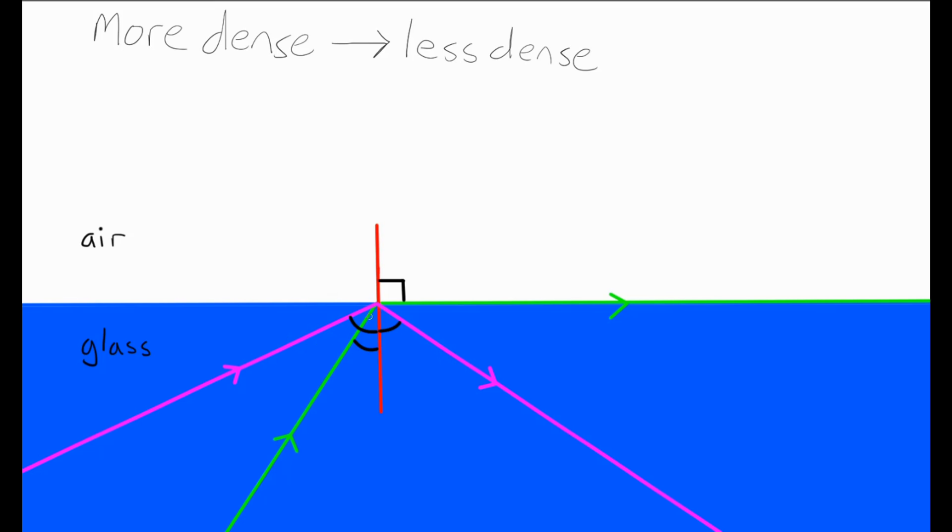Total, because all the light is reflected inside, none of it escapes. Internal, because the reflection takes place internally, it takes place inside the glass. And reflection, because it's reflection and not refraction.